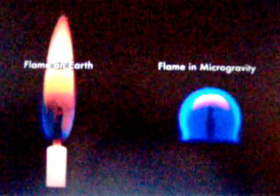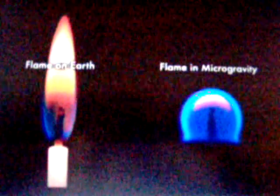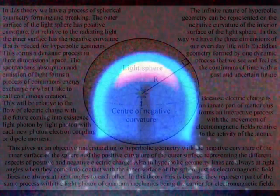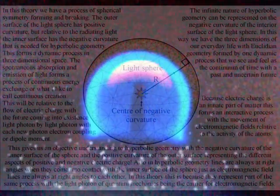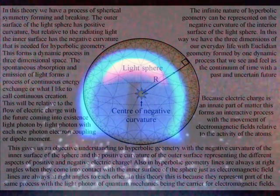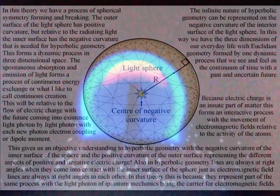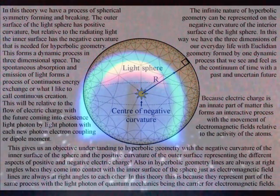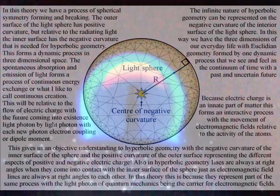The outer surface of the sphere has positive curvature, but relative to the radiating light of the candle flame, the inner surface has the negative curvature that is needed for hyperbolic geometry. This forms a dynamic process in three-dimensional space. Instead of a boundary circle, we have a boundary sphere. The infinite nature of hyperbolic geometry can be represented on the negative curvature of the interior surface of the light sphere.